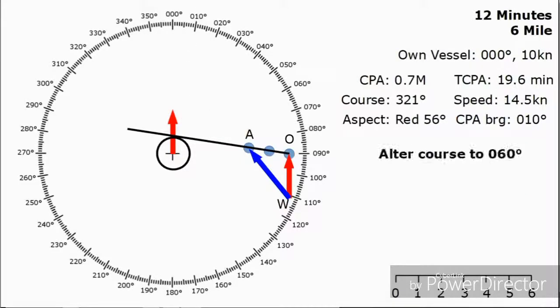I'm going to say that we want to alter course to 060. We're not happy with the CPA that we've got, it's only 0.7 miles, and we know we need to alter to starboard. Because this is a crossing situation, the other vessel is on our starboard side. We are the give-way vessel. We need to make a bold alteration of course to starboard.